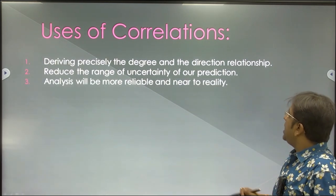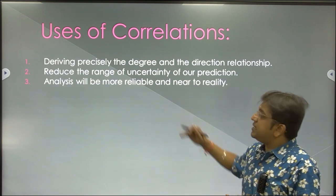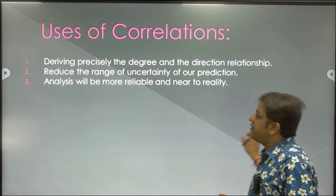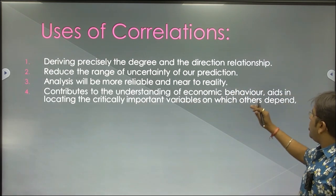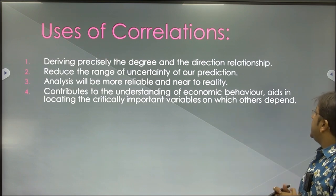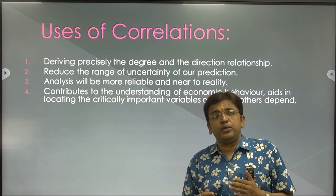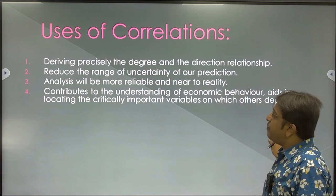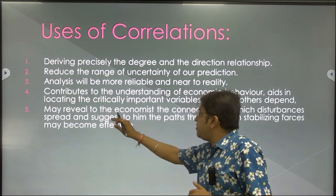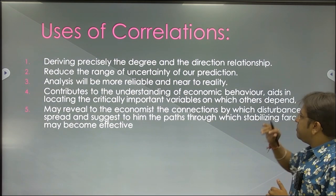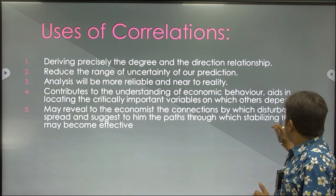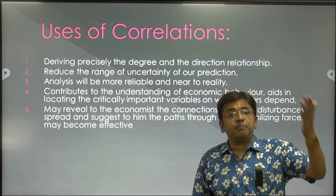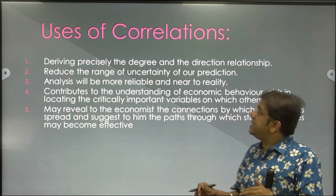Third, the analysis will be more reliable and near to reality — whatever analysis you are doing by the help of correlation is almost near to reality. Correlation between two variables contributes to the understanding of economic behavior and aids in locating the critically important variables on which others are dependent. It may reveal to the economist the connection by which distribution is spread, and suggest the path through which stabilizing forces may become effective.